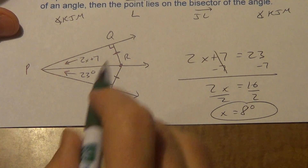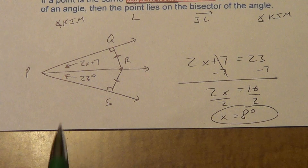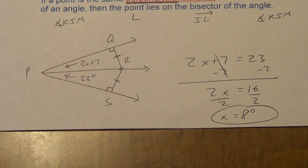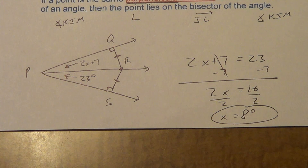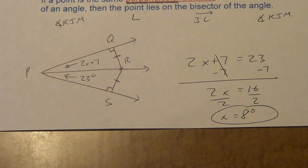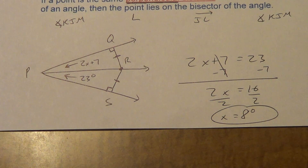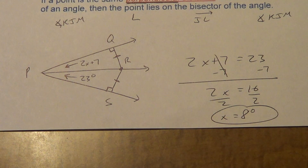Make sure you understand that perpendicular marks are very important whether you're using the regular theorem or the converse. That's it for Lesson 5.3, angle bisector theorem and its converse. But make sure you've also watched the other part of 5.3 — the compass work. Angle bisectors meeting at a point is called the incenter, so make sure you can do that compass work.